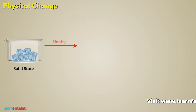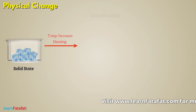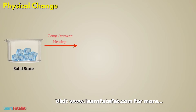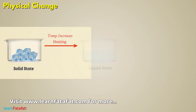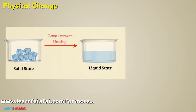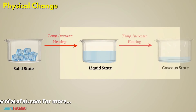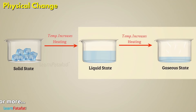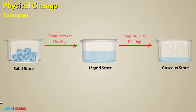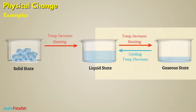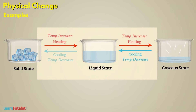By heating a substance, that is by increasing the temperature of the substance, it is possible to change its state from solid to liquid or liquid to gas. Similarly, by cooling, the state can be changed from gas to liquid or liquid to solid.